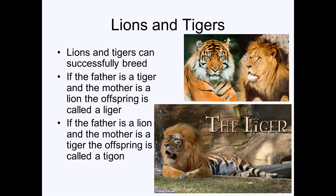Lions and tigers can successfully breed. If the father is a tiger and the mother is a lion, the offspring is called a liger. If the father is a lion and the mother is a tiger, the offspring is called a tigon. This doesn't happen often — they only breed in captivity; in the wild they avoid each other. Their genes are close enough to breed, but again, this does not happen in the wild, and the photoshopped image shown is not real.